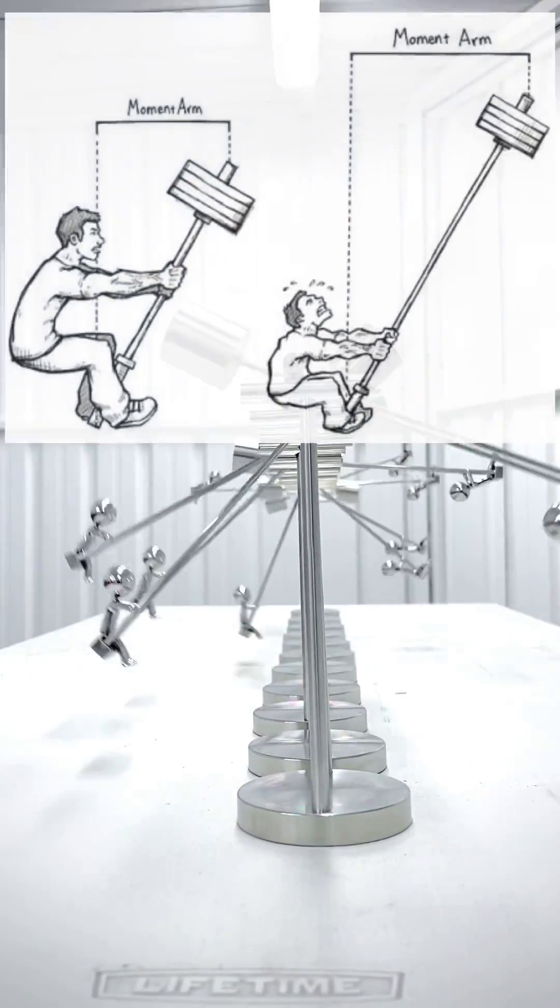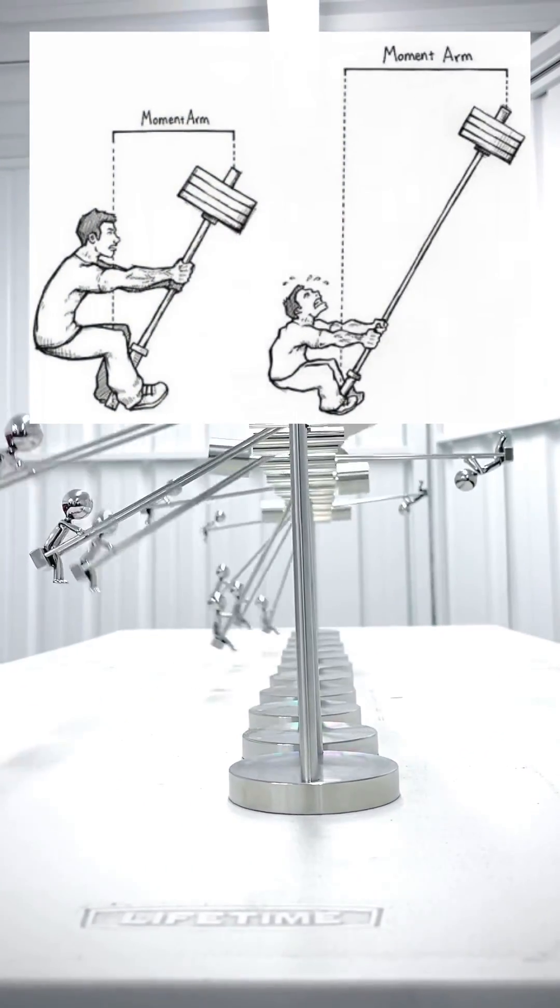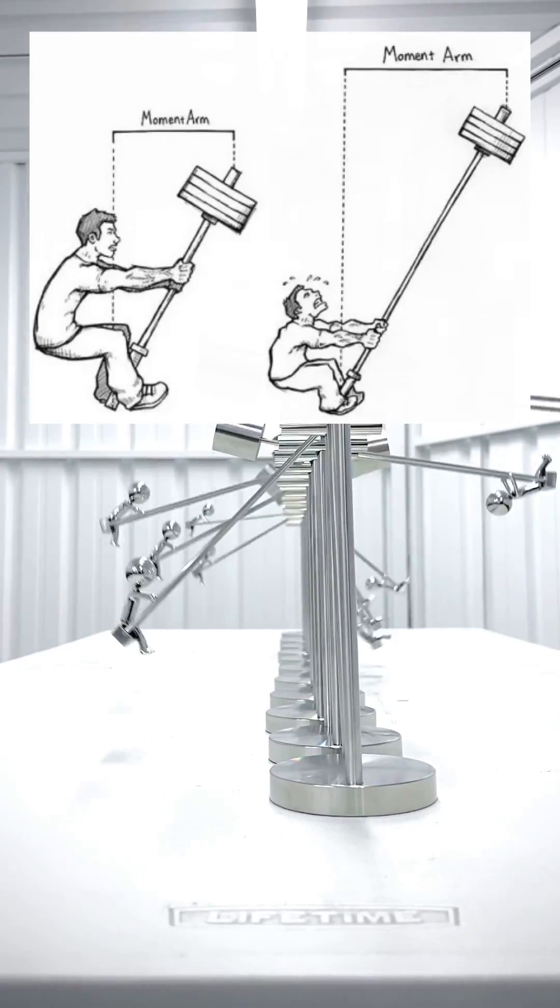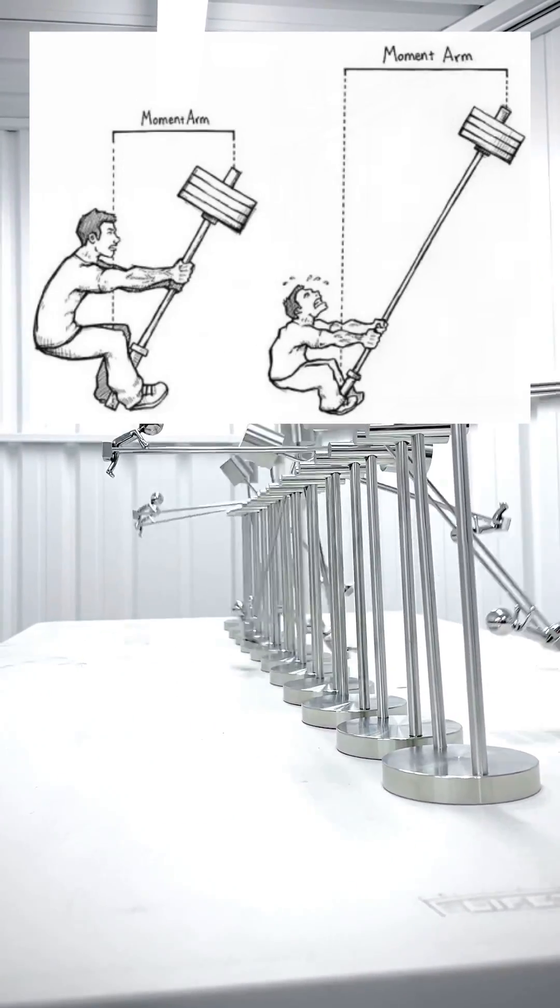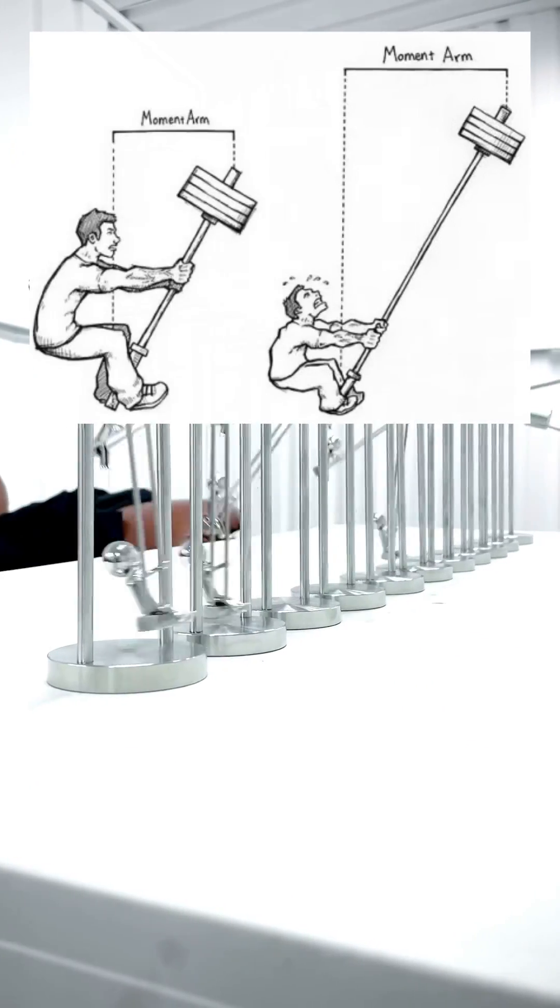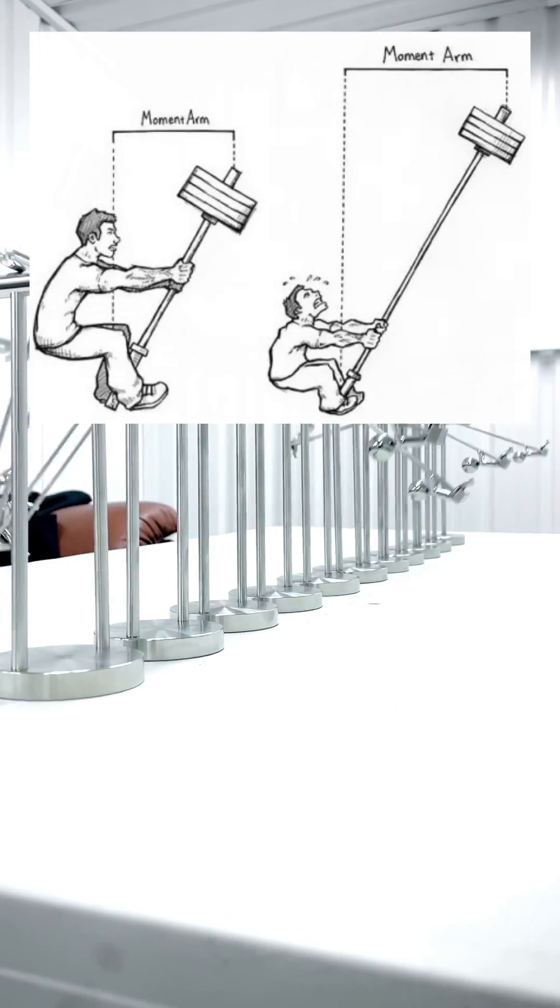I don't want to get too deep in the weeds here, so let's just consider this image. The image on the left is easier to move than the image on the right because of how far away that weight is. This is the moment arm, simply the distance away from which that weight is being moved.